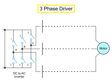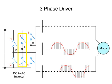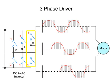In a three-phase drive, the sine waves produced by each pair of inverter switches are 120 degrees out of phase to ensure efficient operation of the motor.